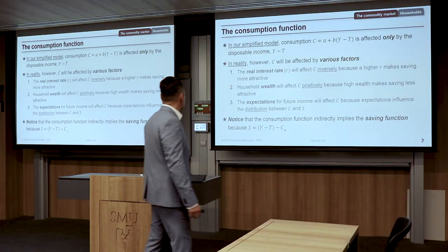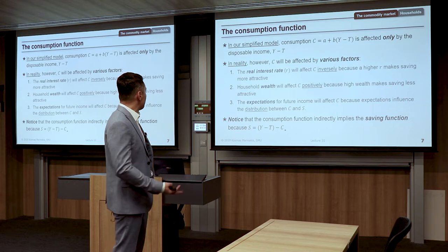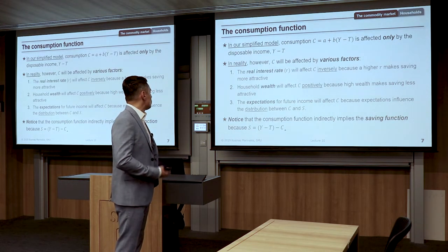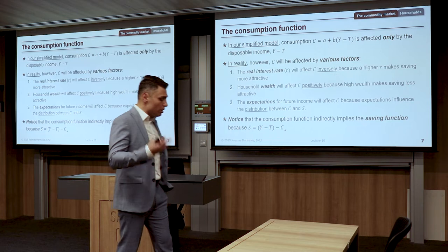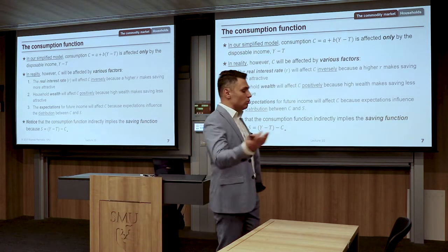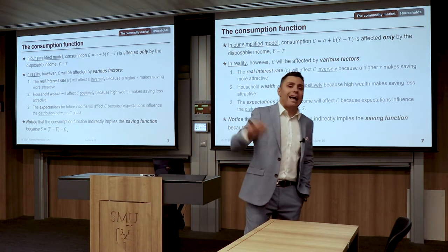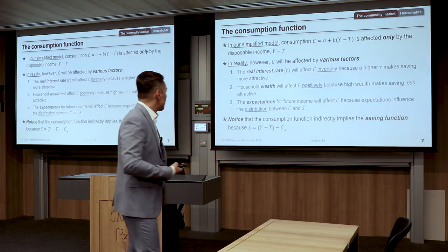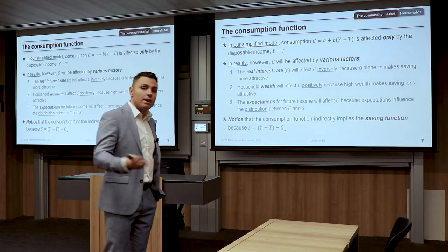Note that the consumption function implicitly implies a saving function. From the identity S equals the disposable income minus consumption — whatever I do not consume, I save. You can apply this equation and derive a saving function with very simple algebra.